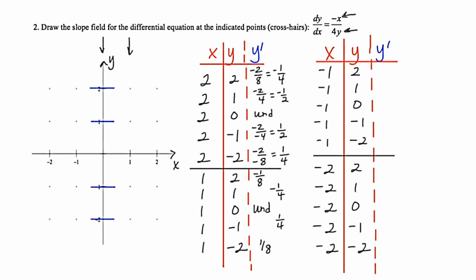Continuing to the column with x values of negative 1: positive 1 over 8 (1 eighth); positive 1 over 4 (1 fourth); positive 1 over 0, which is undefined; positive 1 over negative 4, which is negative 1 fourth; and positive 1 over negative 8, which is negative 1 eighth.